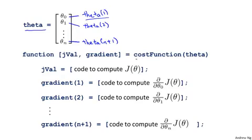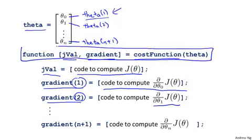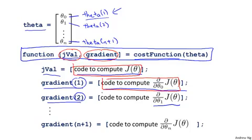What we need to do is write a cost function that captures the cost function for logistic regression. Concretely, the cost function needs to return jval — code to compute J of theta — and we also need to give it the gradient. gradient(1) is code to compute the partial derivative with respect to theta 0, gradient(2) is the partial derivative with respect to theta 1, and so on. The main concept is that you need to write a function that returns the cost function and returns a gradient. To apply this to logistic regression — or even to linear regression if you want to use these optimization algorithms — you plug in the appropriate code to compute these things.